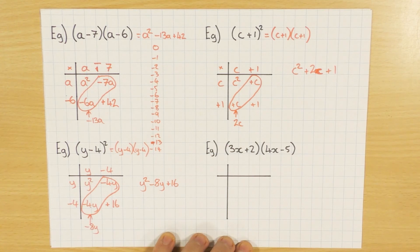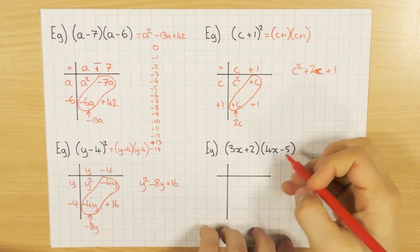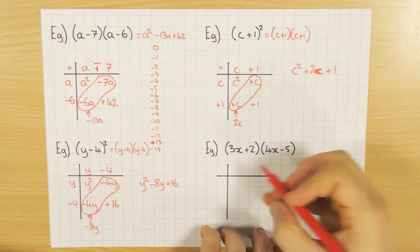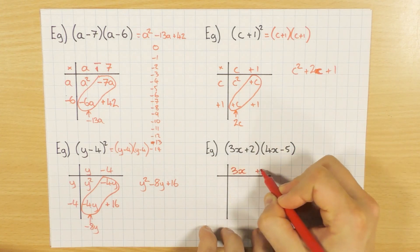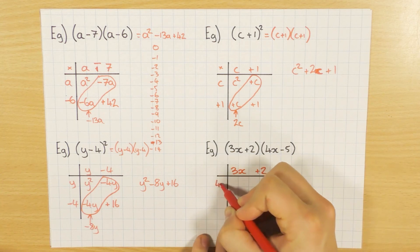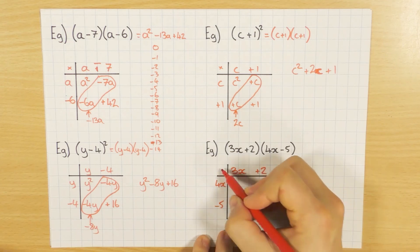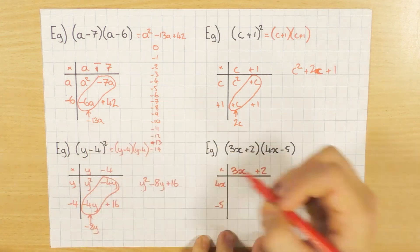Super job. Okay, and last one. Last example, sometimes you get something a little bit more interesting, but it's exactly the same method. We still write the bracket, one bracket at the top, one bracket at the bottom, on the side sorry. And we still times. Yeah, we were timesing there as well.